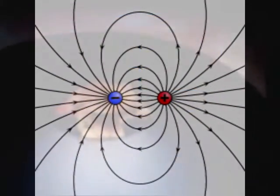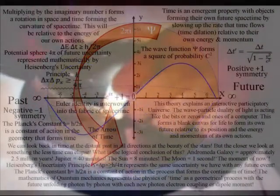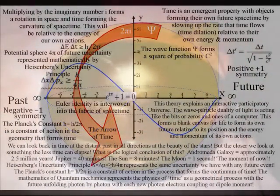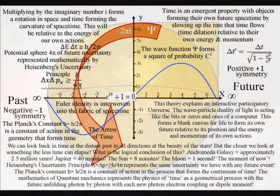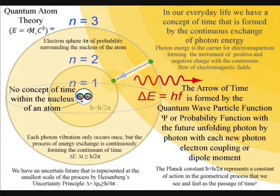The holographic principle is in play here, with the information of our three spatial dimensions of our everyday life written on the two-dimensional surface like a hologram. The area of a sphere is equal to the square of the radius of the sphere multiplied by four pi. At the smallest scale of the process, this is seen as a square of probability formed by the spontaneous absorption and emission of light. Mathematically, this information is represented by the quantum wave particle function or probability function.